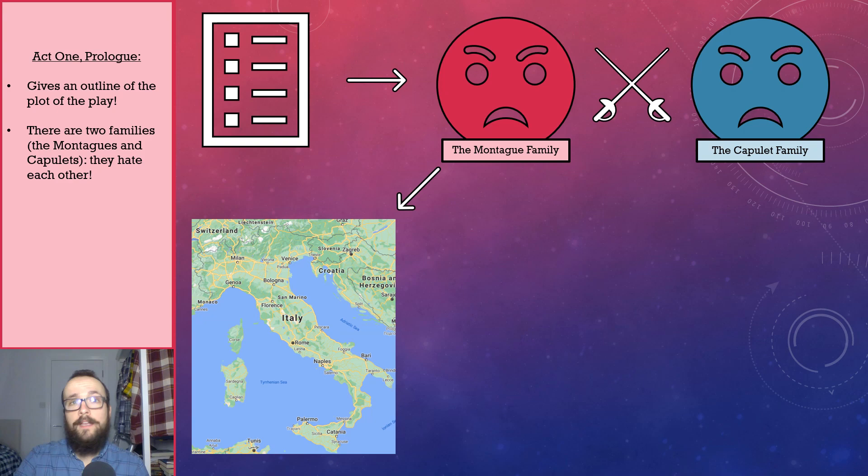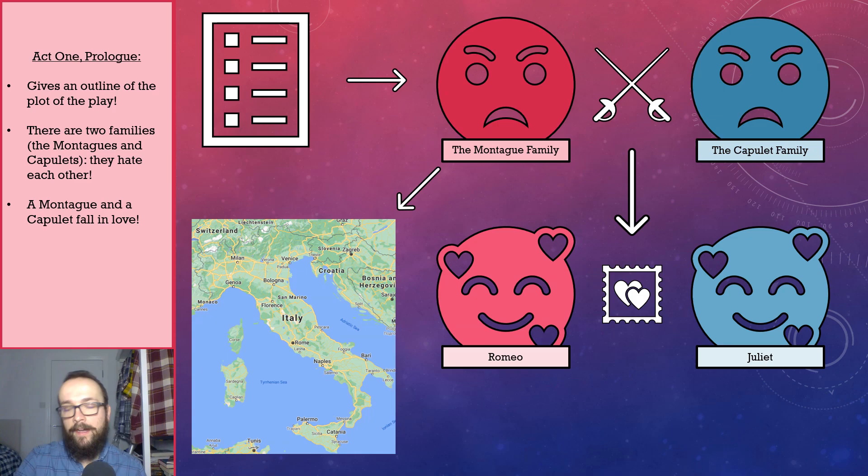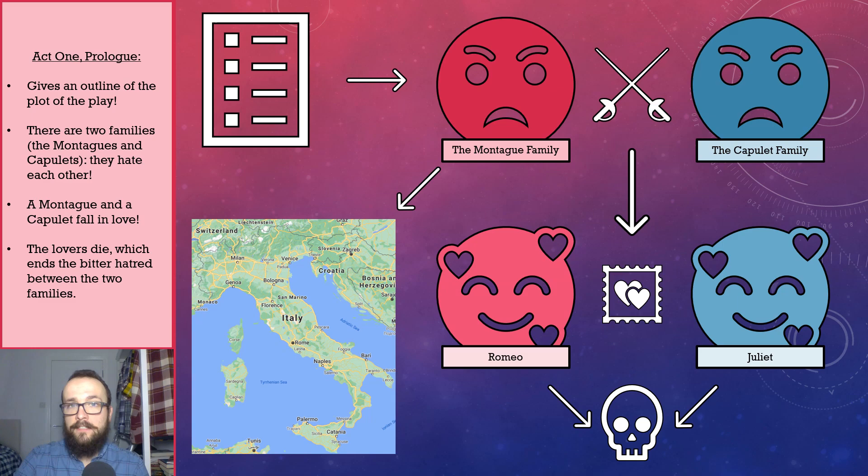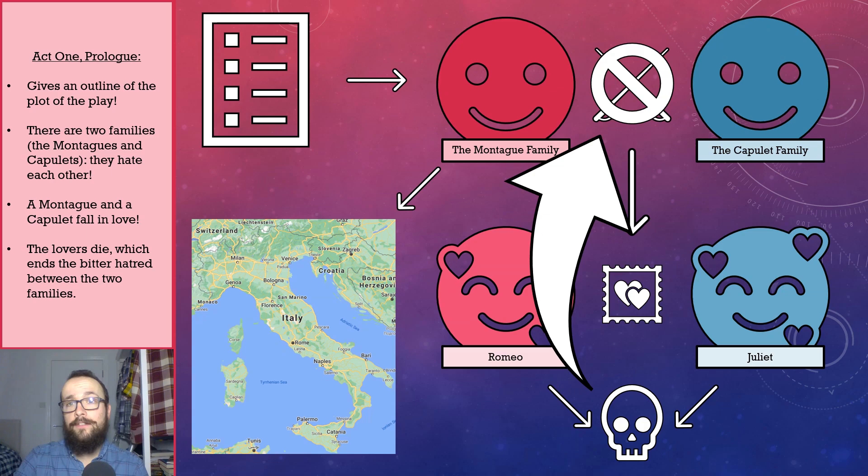These two families hate each other and have a long-standing feud. Importantly, fate determines that a Montague and a Capulet, namely Romeo and Juliet, become star-crossed lovers. By the end of the play, we are told, these lovers die. These two deaths, it turns out, are the only thing that can end the bitter hatred that exists between the two families.